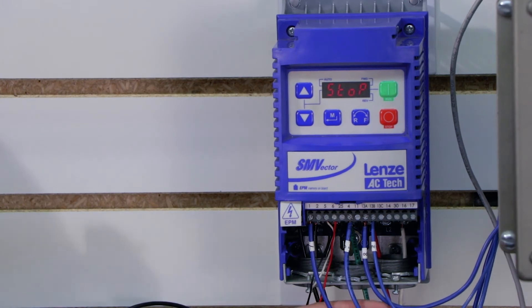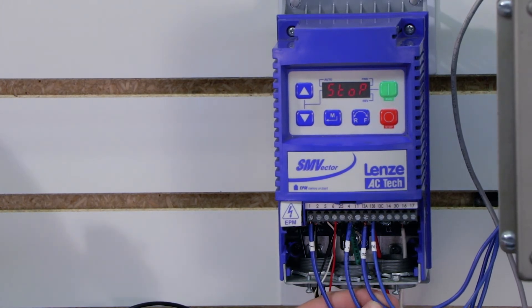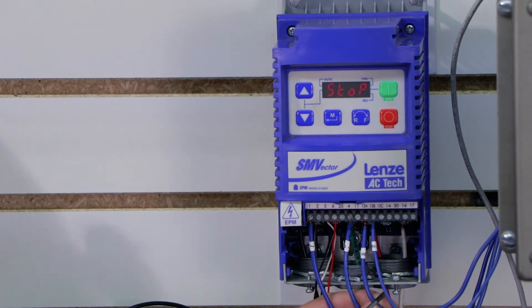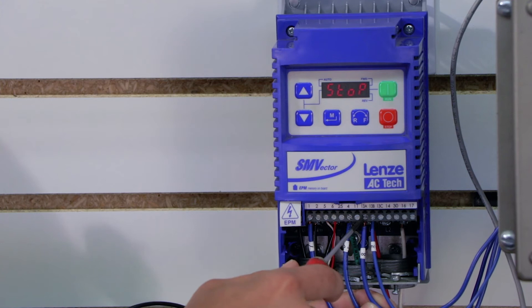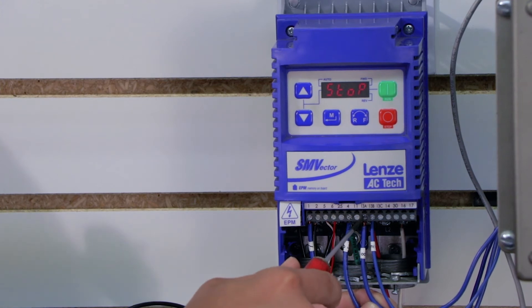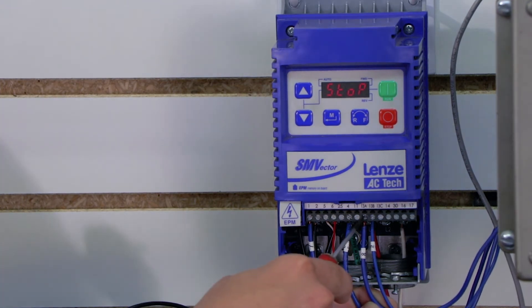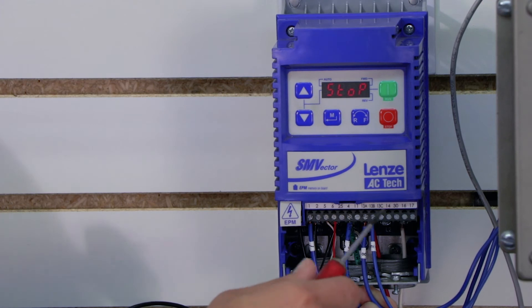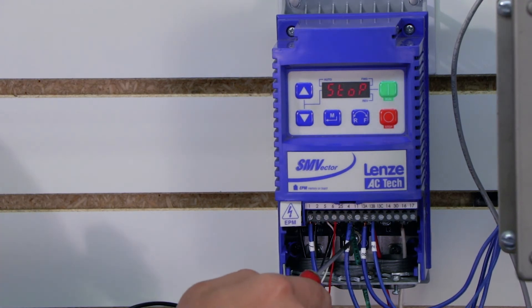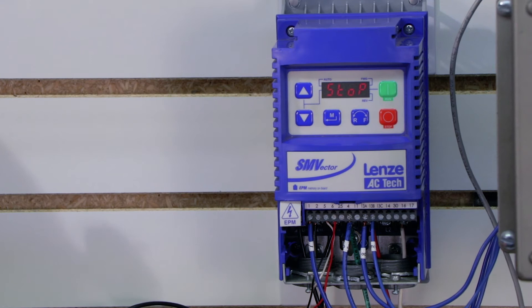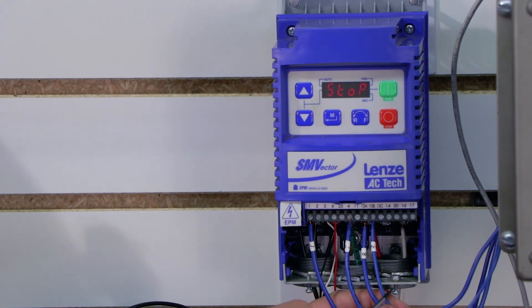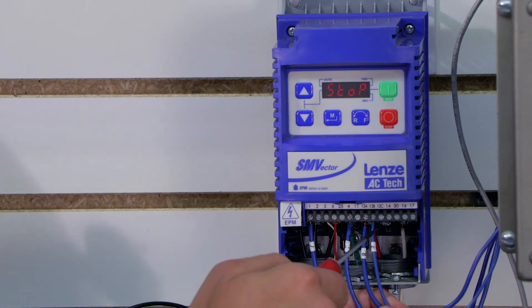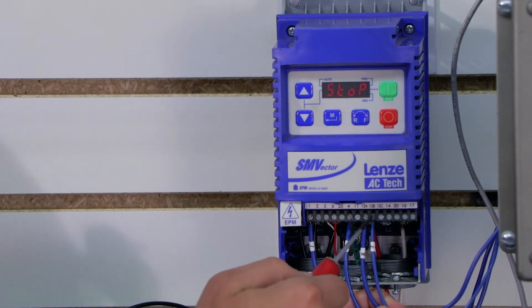4 then goes out to the side of our forward button, the normally open side of our forward button, and then it comes back on the other side of that normally open button to 13a. 13a, we're going to program for start forward. I'll do that here momentarily. 4 also goes to the front side of our reverse button on the normally open contact, and then it comes back from the other side of that normally open reverse button to 13b, which we will program for start reverse.